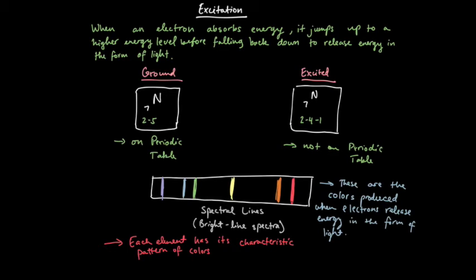And these excited state configurations are not on the reference table. And so you've got to figure out how this configuration is going to work out. And when an electron releases energy going from the excited state to the ground state, it's going to produce these colors in the form of spectral lines. An electron has to absorb energy to go up from the ground state to the excited state. And to go back down to the ground state, it has to release energy.